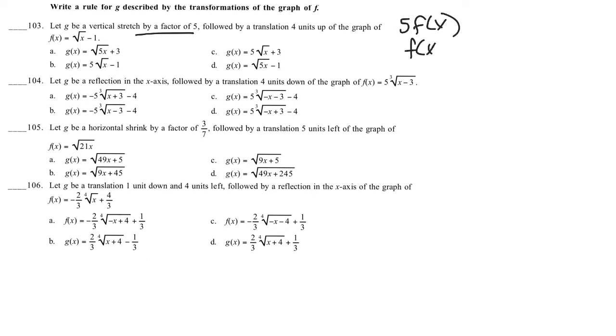That's f(x) plus 4 of the square root of x minus 1. So that's 5 times the square root of x minus 1, which becomes 5 square root of x minus 5.